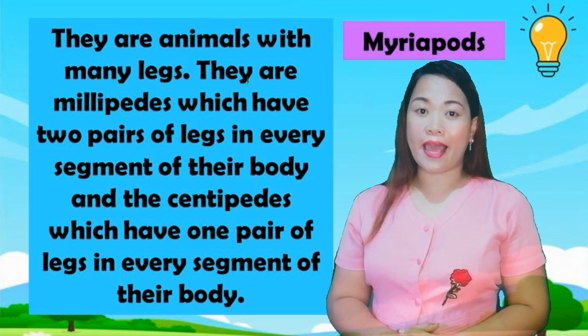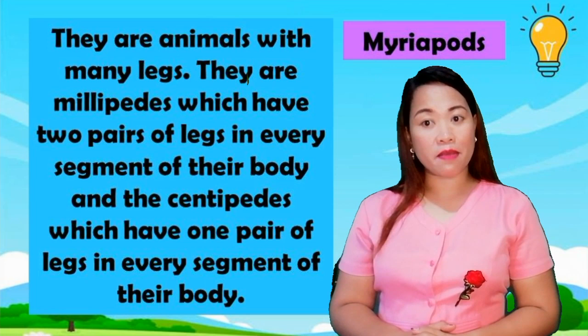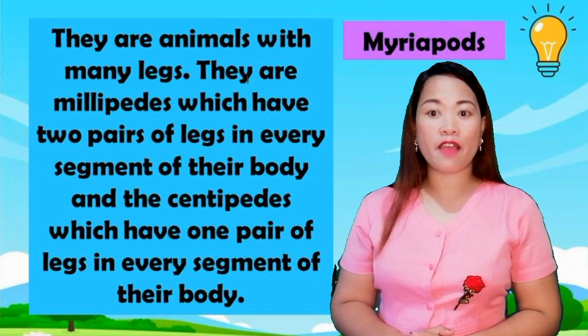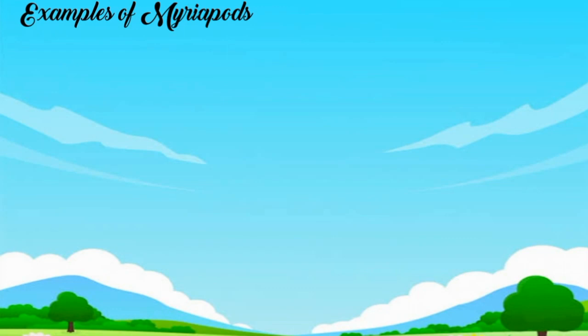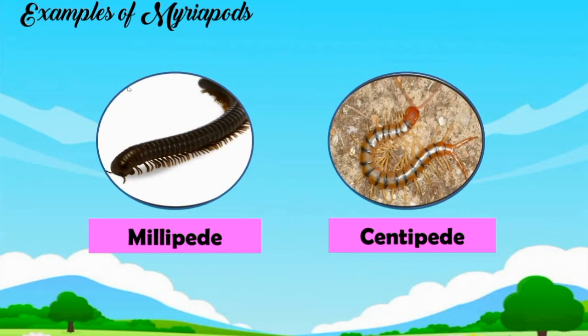Myriapods are animals with many legs. They include millipedes, which have two pairs of legs in every segment of their body, and centipedes, which have one pair of legs in every segment of their body. Examples of myriapods: millipede, centipede.